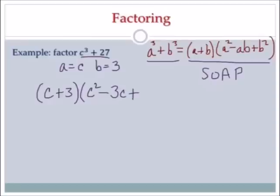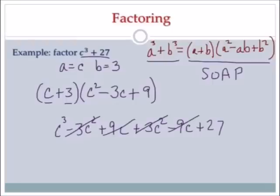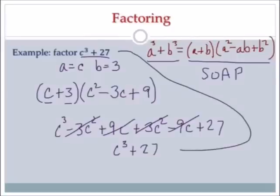Then plus, because it's always a plus, and b squared is 9. I think that's my final answer, but let's check by distributing the c and the 3. c times c squared is c cubed. c times negative 3c is negative 3c squared. c times 9 is 9c. Then 3 times c squared is 3c squared, 3 times negative 3c is negative 9c, and 3 times 9 is 27. Negative 3c squared plus 3c squared is 0, and 9c minus 9c is 0. I'm left with c cubed plus 27, which is what I started with. So this is my final answer.